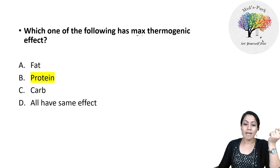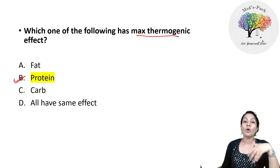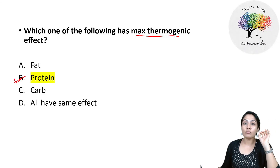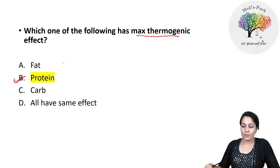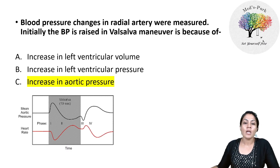Which of the following has the maximum thermogenic effect? When we eat proteins, more and more metabolism is stimulated. Metabolic rate increases by 15 to 30 percent after digestion of protein. That's why the answer is proteins, not fats or carbohydrates.